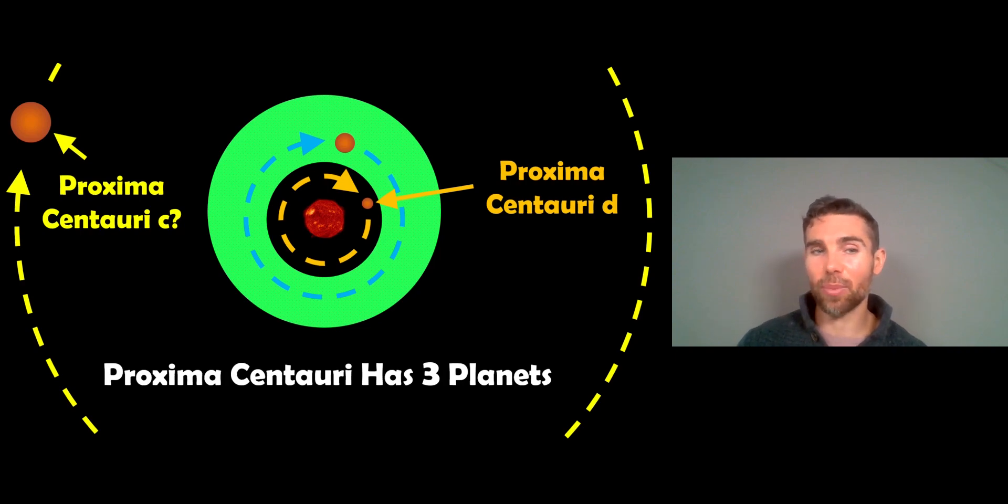So Proxima Centauri c, I believe, it's not 100% confirmed. There's a signature there which could hint at being a planet. But Proxima Centauri d, which is on the inner part, so it's inside the habitable zone, is obviously a lot closer. It's going to be too hot, not habitable. But Proxima Centauri c is a bit further out. And again, that's not 100% confirmed. But the one we're really interested in is Proxima Centauri b, in that habitable zone.